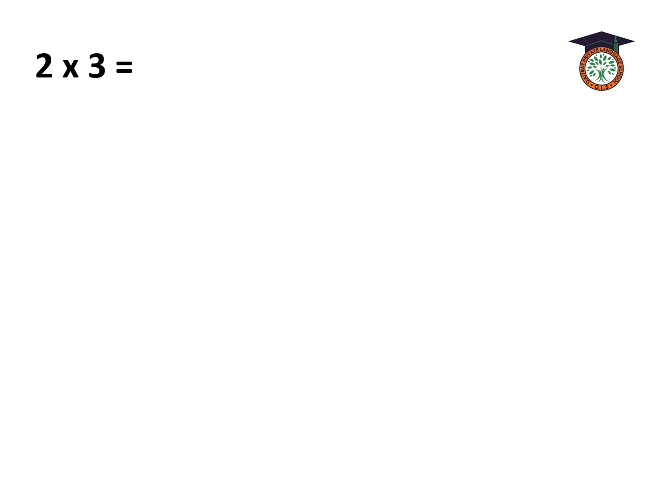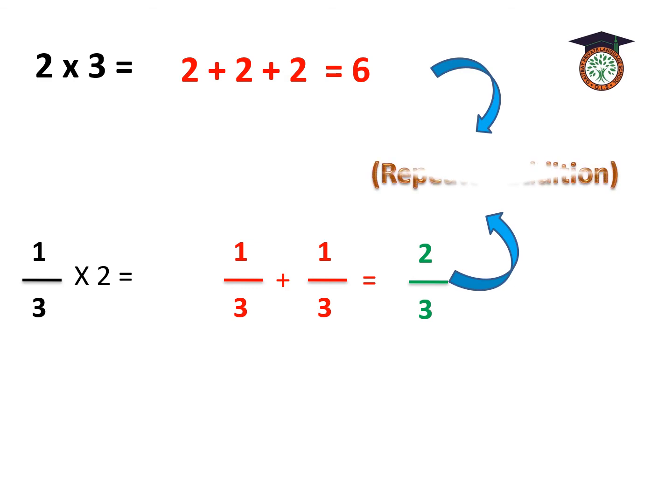2 times 3. Remember, what do we mean by 2 times 3? That means 2 plus 2 plus 2. It will be equal to 6. One-third times 2. That means one-third repeated two times. One-third plus one-third. It will be equal to 2 over 3. This way is called repeated addition.